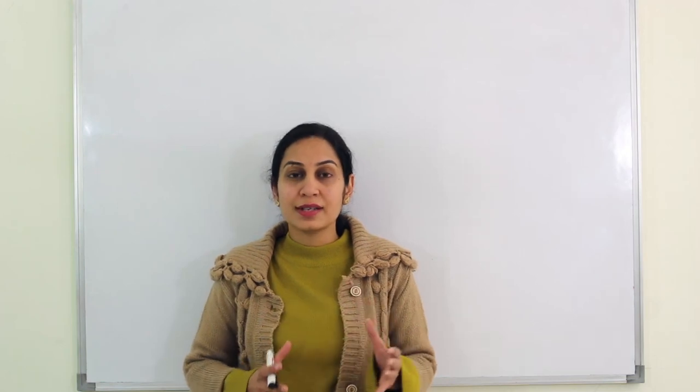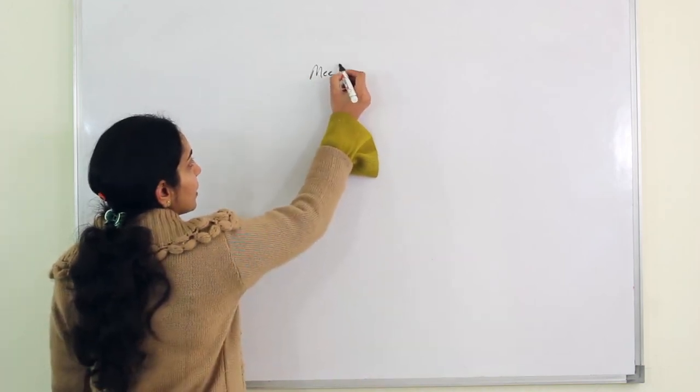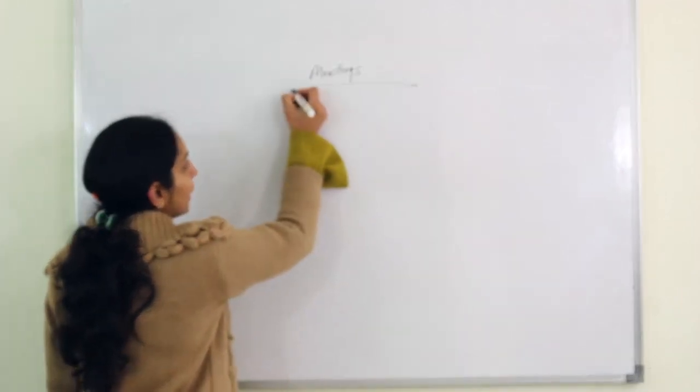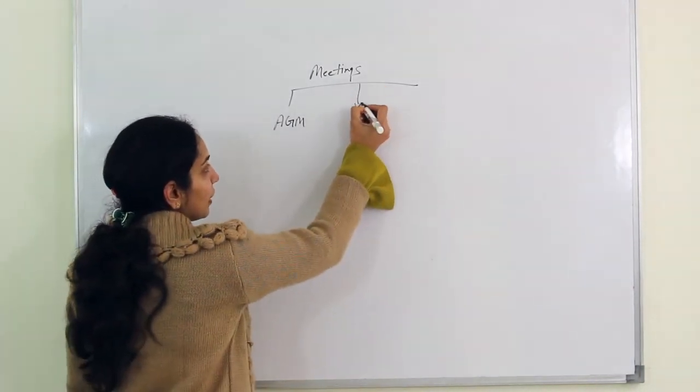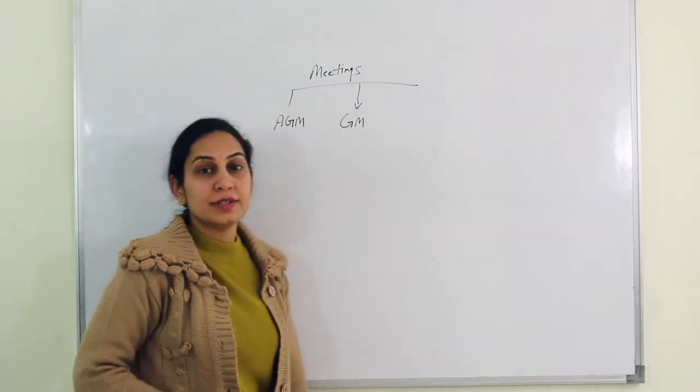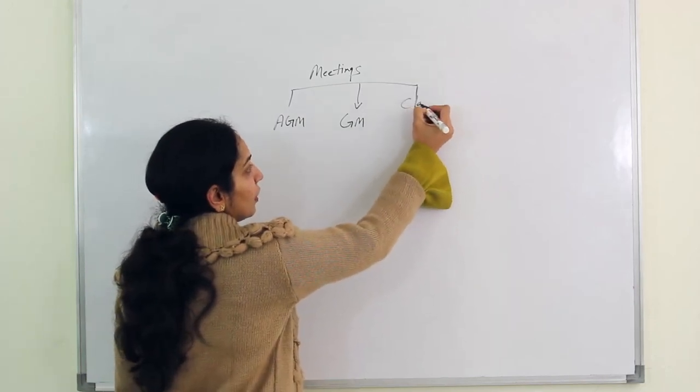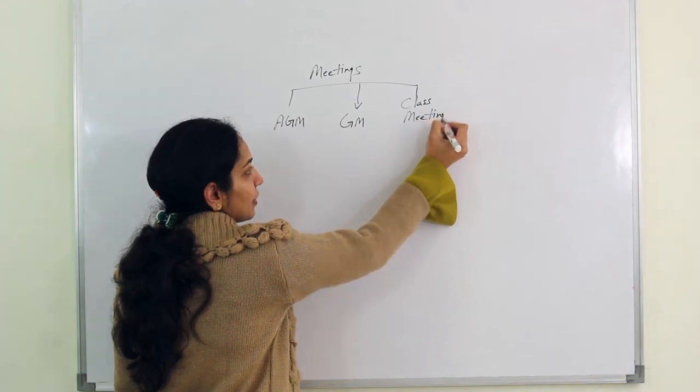So basically there are certain meetings which are conducted by directors we call them board meeting. Any meeting which is conducted by board of directors where they decide lot of operational strategies and different strategies for business we call that board meeting. But agenda of this chapter is not to discuss the board meeting but the meetings which are conducted with the shareholders. So let's talk about those meetings first. Let me classify the meetings into three important segments.